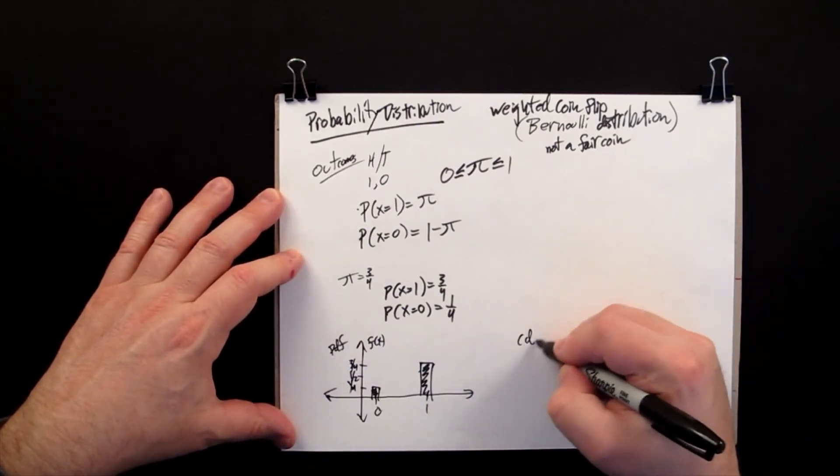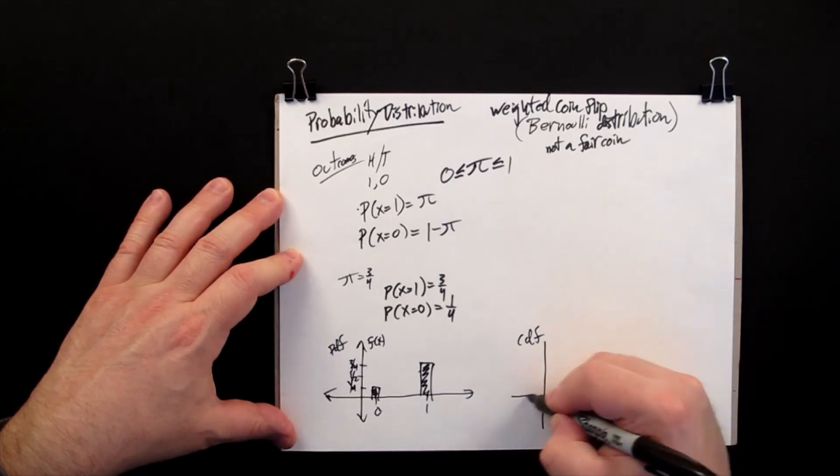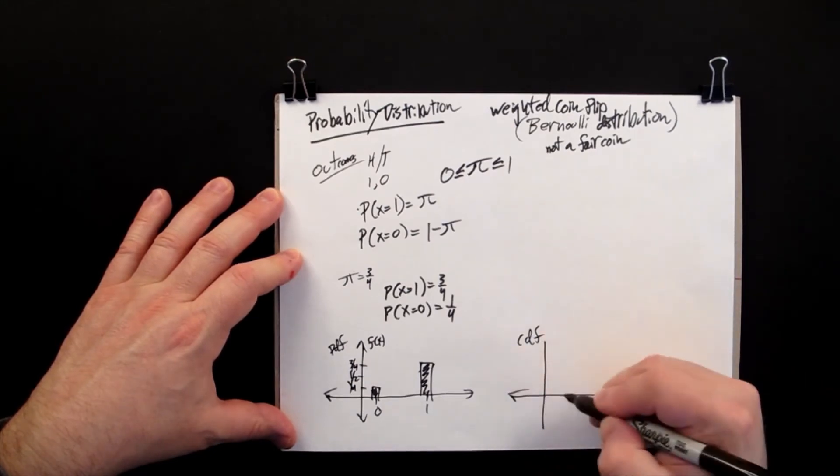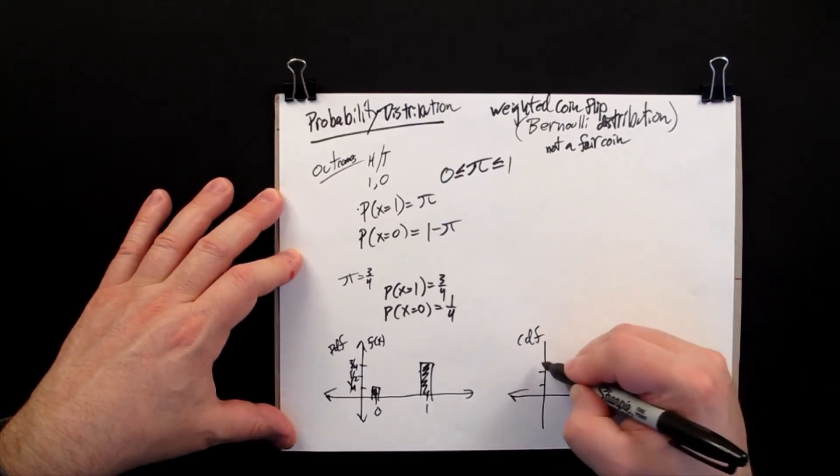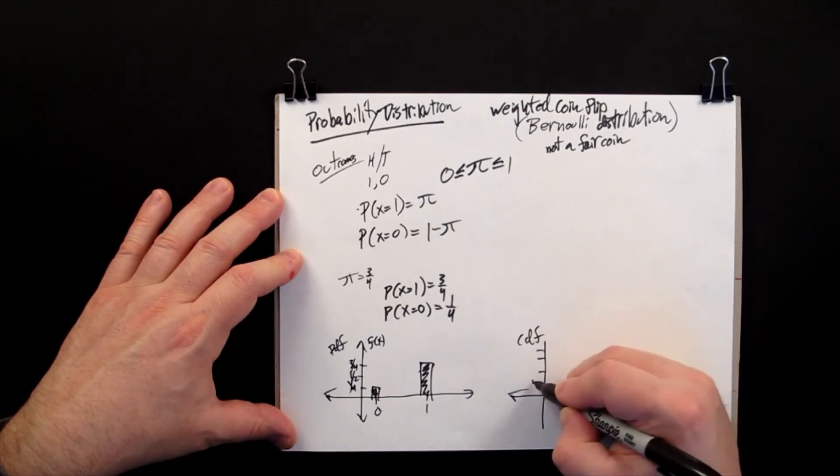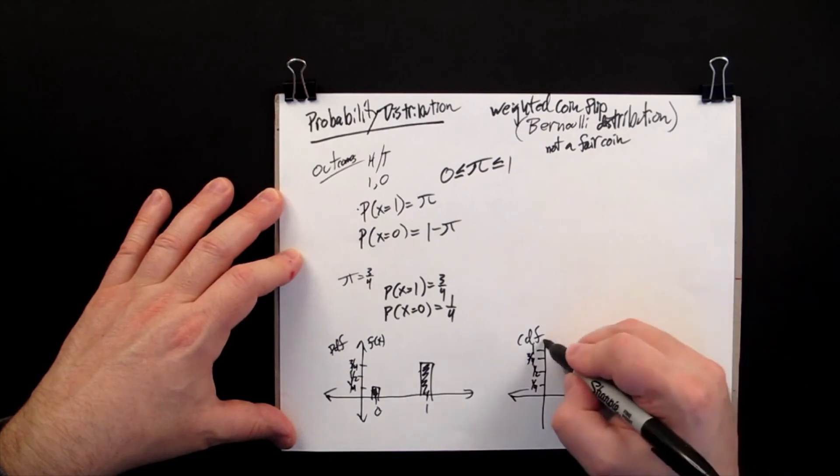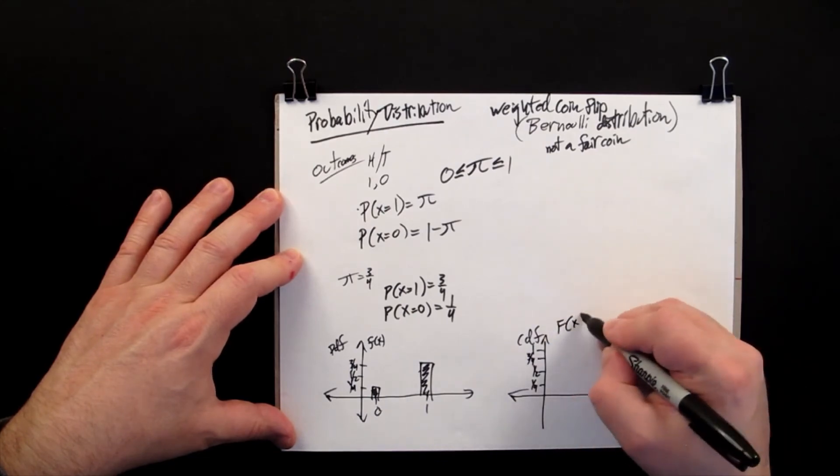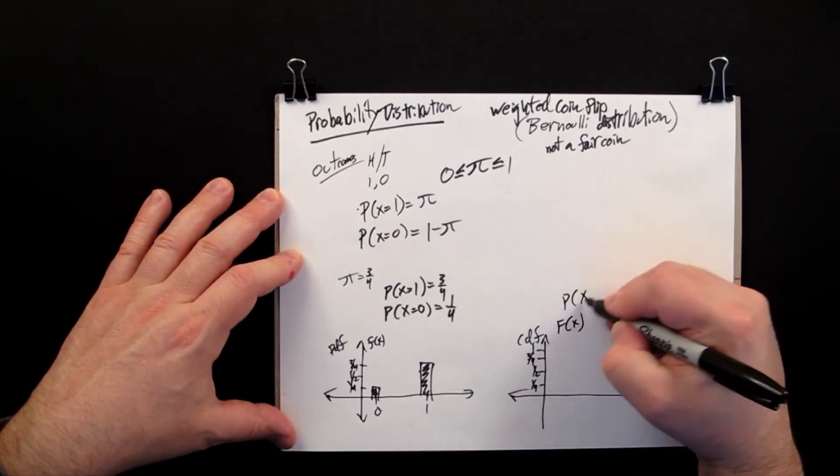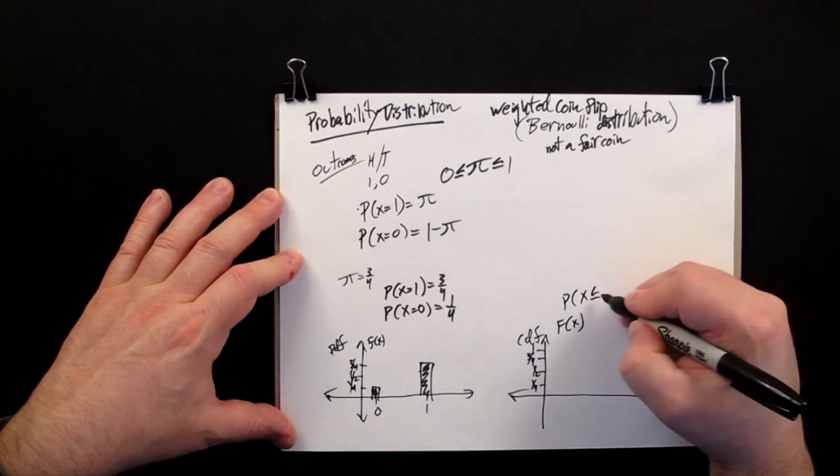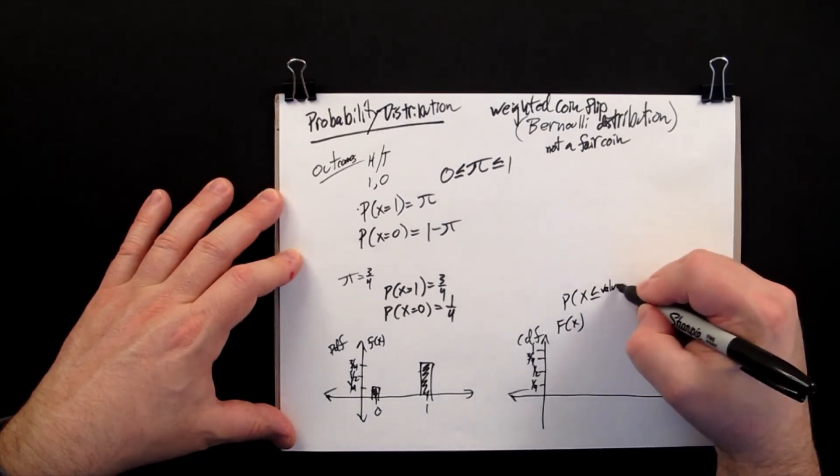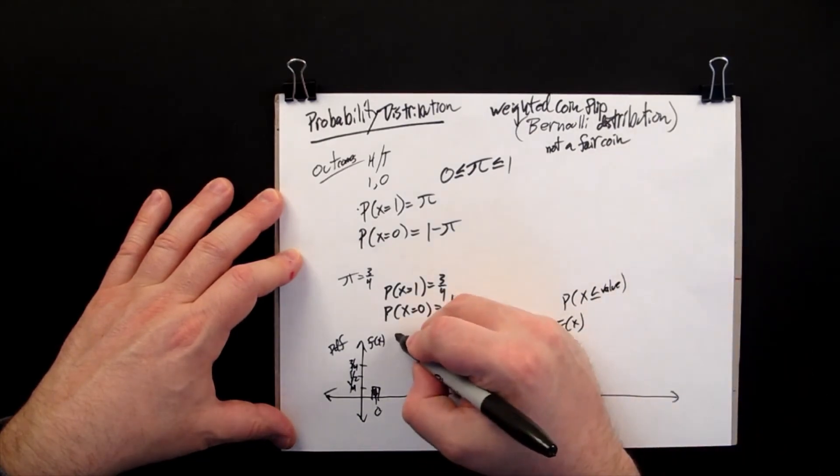And the CDF, so we have 1 quarter, 1 half, 3 quarters, 1. This time we're graphing big F of x. So this is graphing x less than or equal to some value, and this is graphing the chance that x equals value.